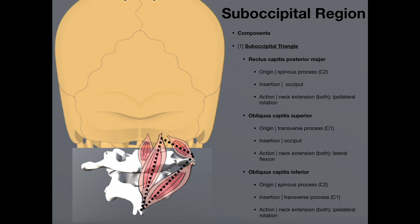The action of the rectus capitis posterior major: if both left and right muscles contract, we get neck extension — it assists in that. And if one of them contracts, we get ipsilateral rotation of the neck. So for example, if the right rectus capitis posterior major contracts without the left, then we get rotation of the neck to the right.